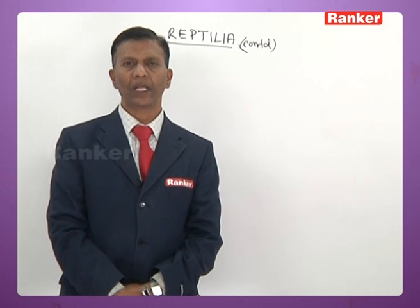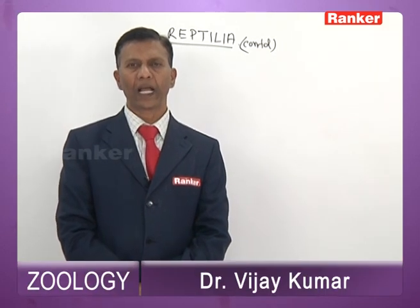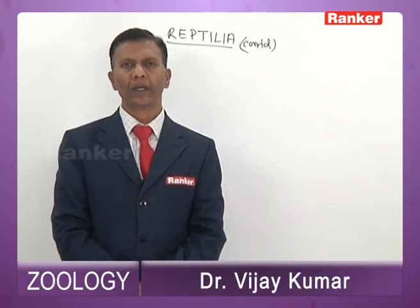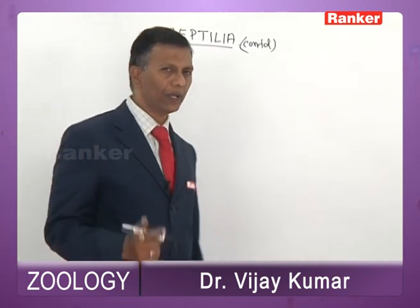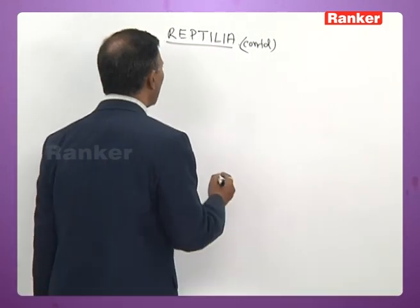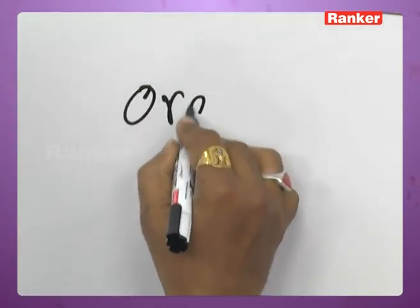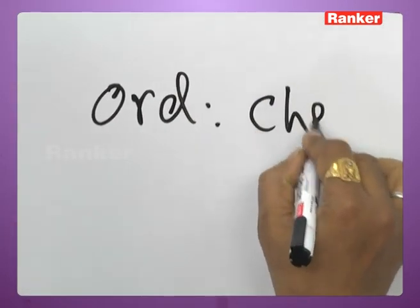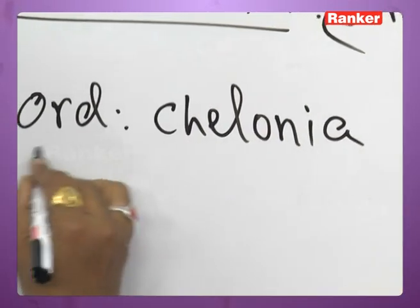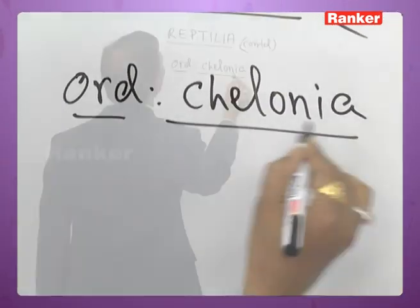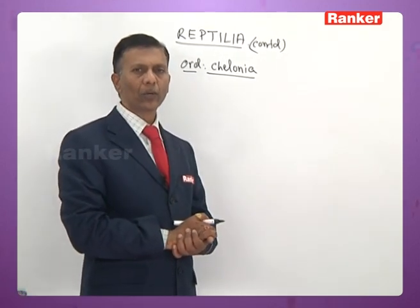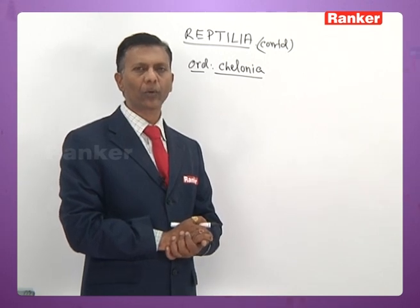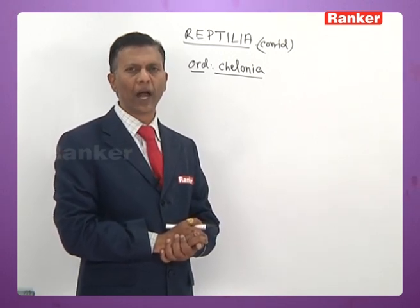Having discussed the general characters and classification of Reptilia, we now take up the characteristics of different orders. The subclass Anapsida is divided into two orders: Chelonia and Cotylosauria.